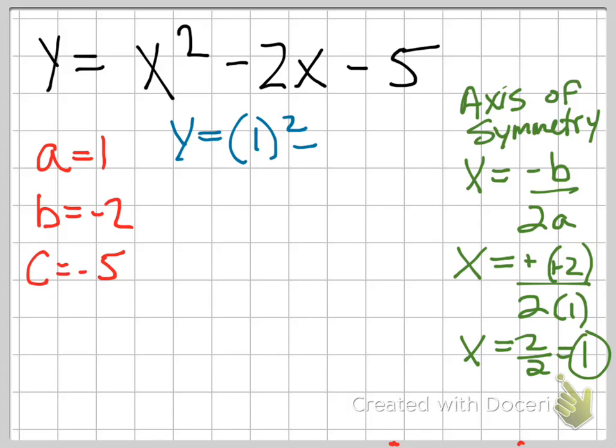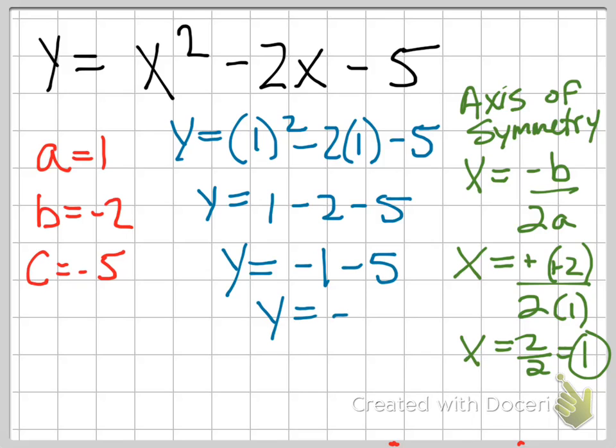So, y equals one squared minus two times one minus five. Order of operations tells me to do exponents first. So, one squared is one. And then, multiplication, which is negative two times one is negative two. And so, I have one minus two minus five. And then, one minus two is negative one. Negative one minus five reduces down to negative six. So, the x part of my vertex is one. The y part of my vertex is negative six. So, my answer is one comma negative six.